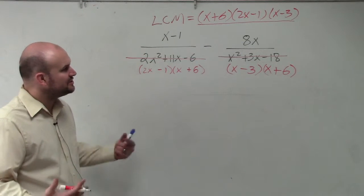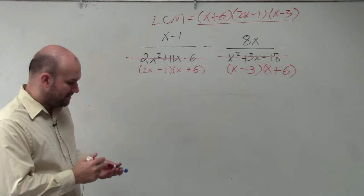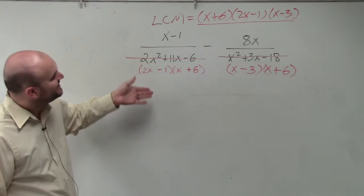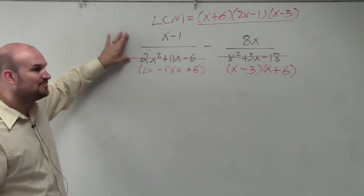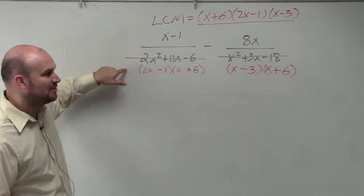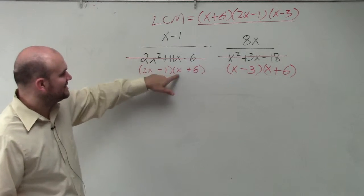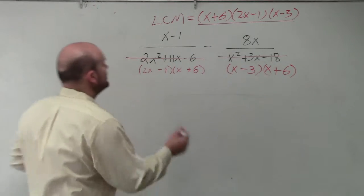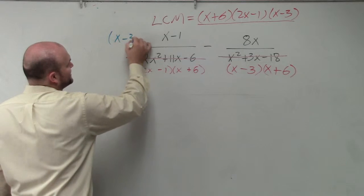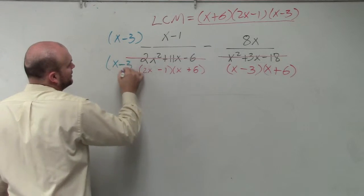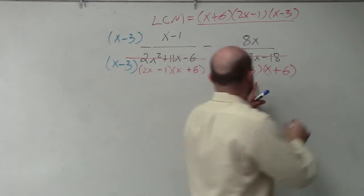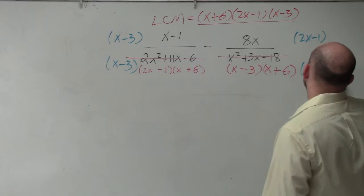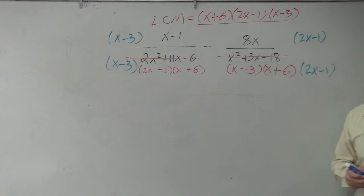Now, all I'm simply going to do to be able to subtract them, you've got to multiply so you can obtain your least common multiple. So what do I need to multiply this by to make it look like that? x minus 3. To produce equivalent fractions, you need to multiply that in the numerator and the denominator. I need to multiply this by 2x minus 1 on the top and the bottom. OK?